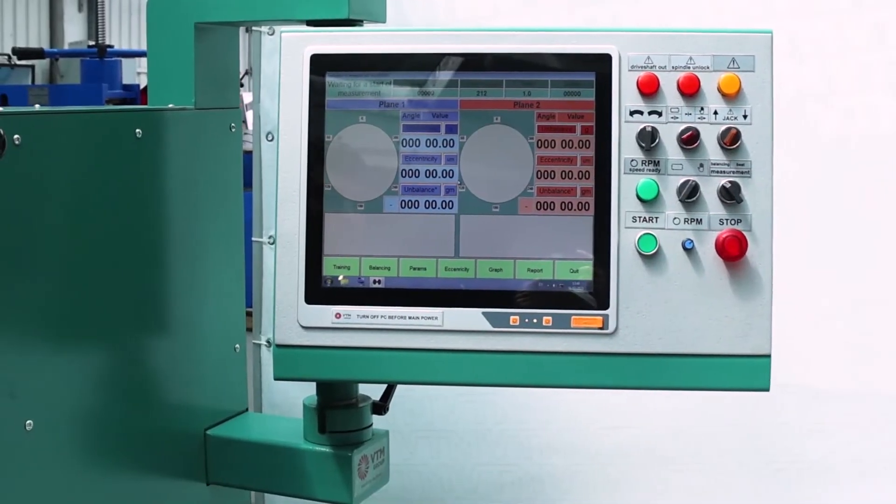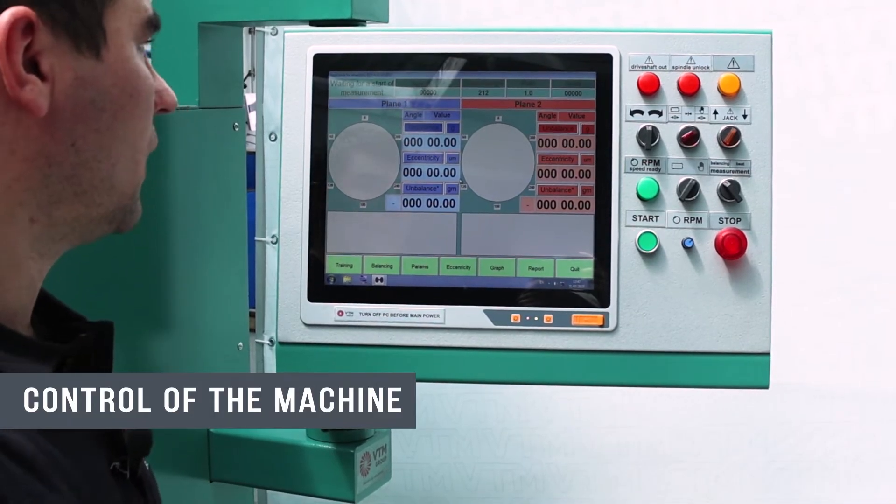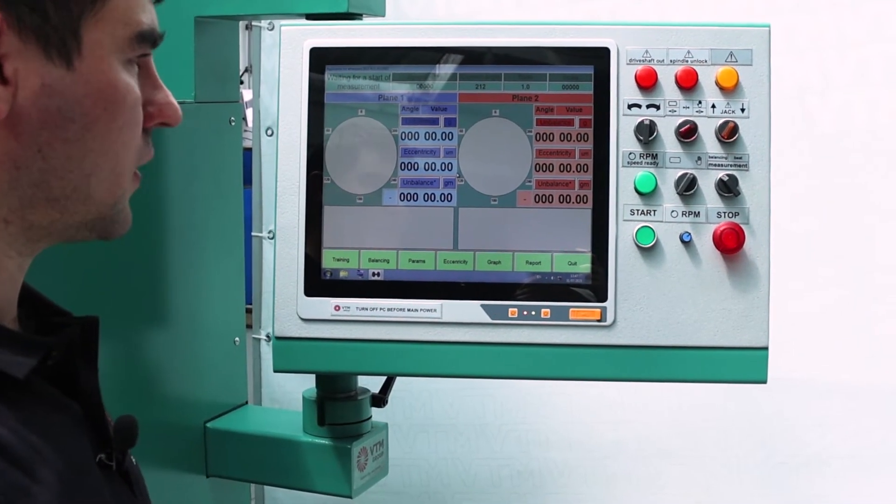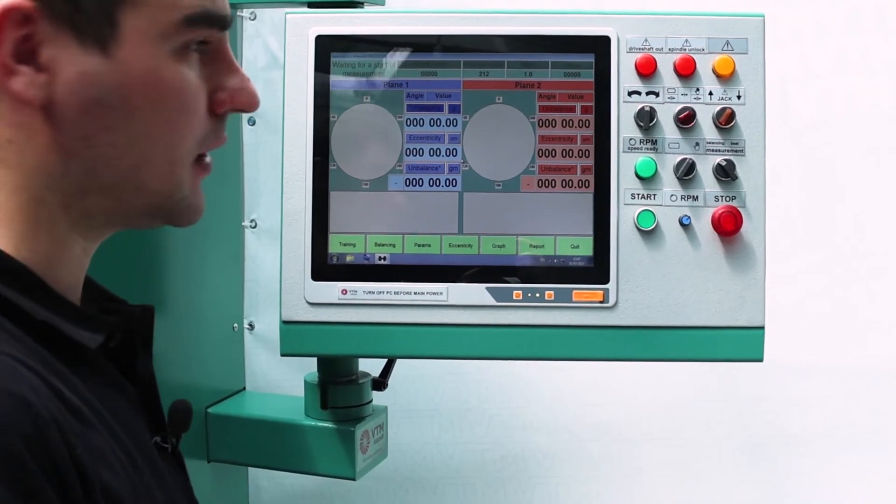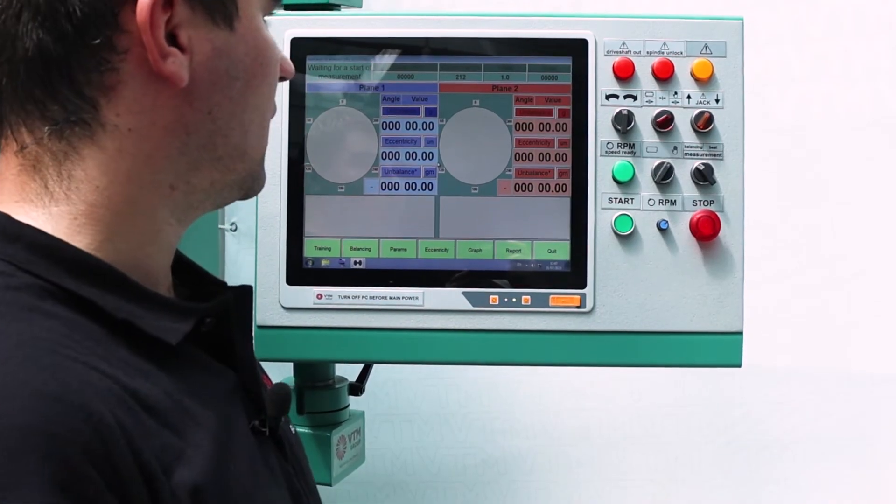On the left side we have a computer, on the right side we have control, that is, switch buttons and warning lights.